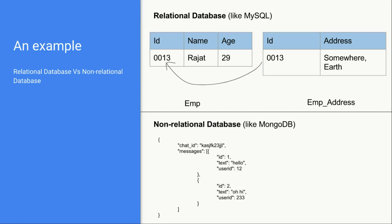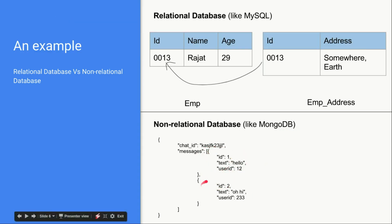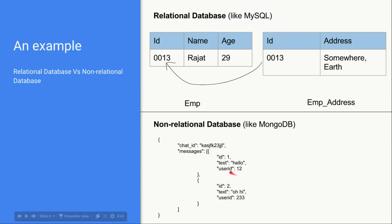Now let's move on to non-relational databases. As mentioned, non-relational databases mostly store data in key-value pairs. Let's suppose this is an entry for a particular chat, and the chat messages are stored like this: the key is 'chat_id' and its value contains an array — denoted by square brackets — and this message array itself contains several other key-value pairs. Each element in the array is one message, and all data for that message is contained in that single record.